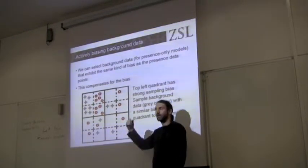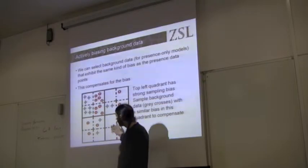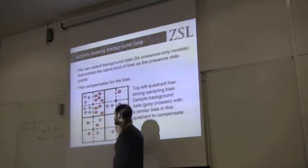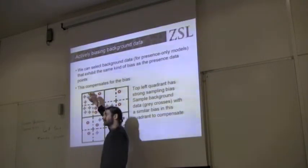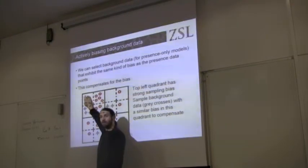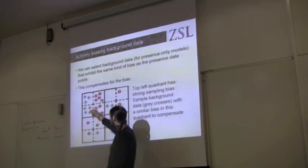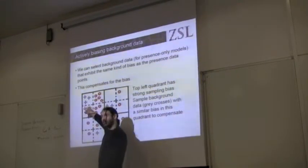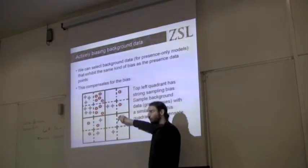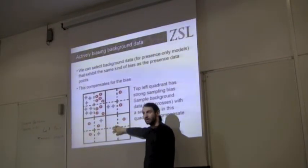So when we come to choose our background data, we try to make it so that the background data also reflect the sampling bias. In this case, we've got lots of presence points in this quadrant, so we're going to take more background data from this quadrant as well. In this quadrant, we're very lightly sampled, so we're going to lightly sample our background data from this area as well.